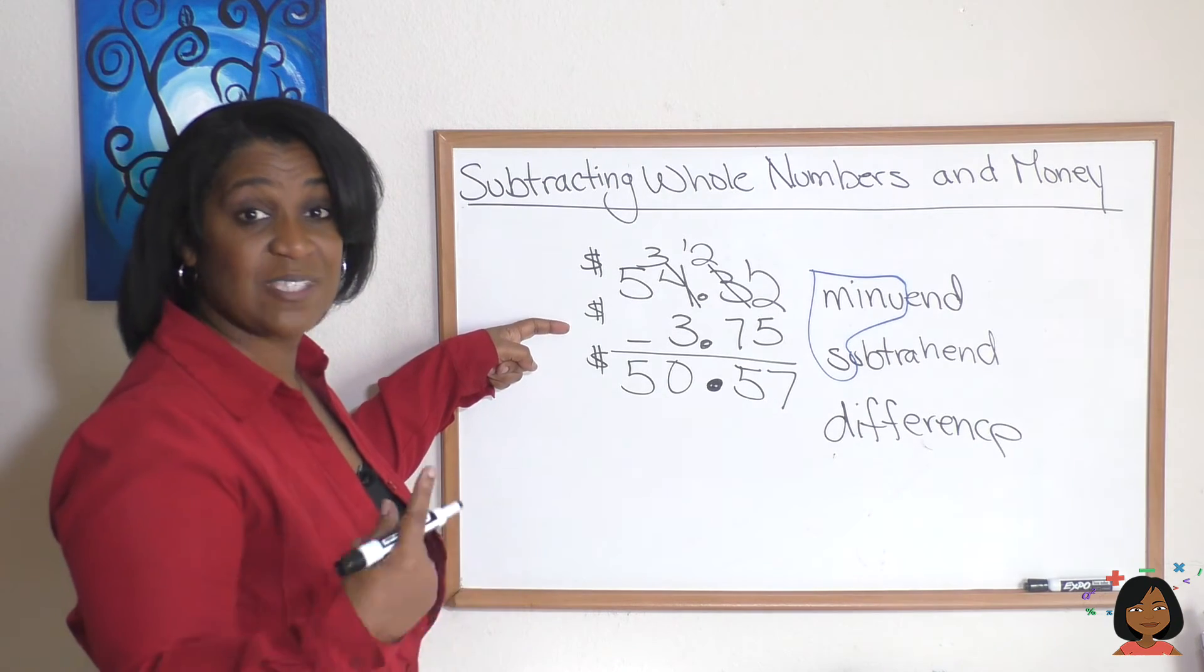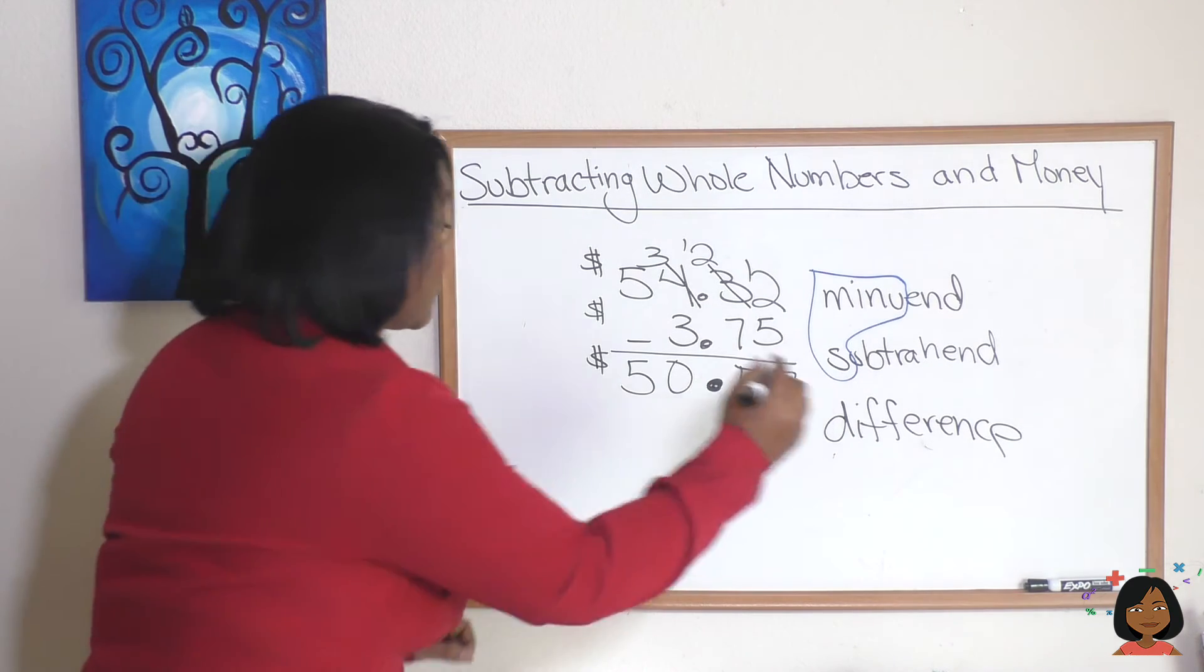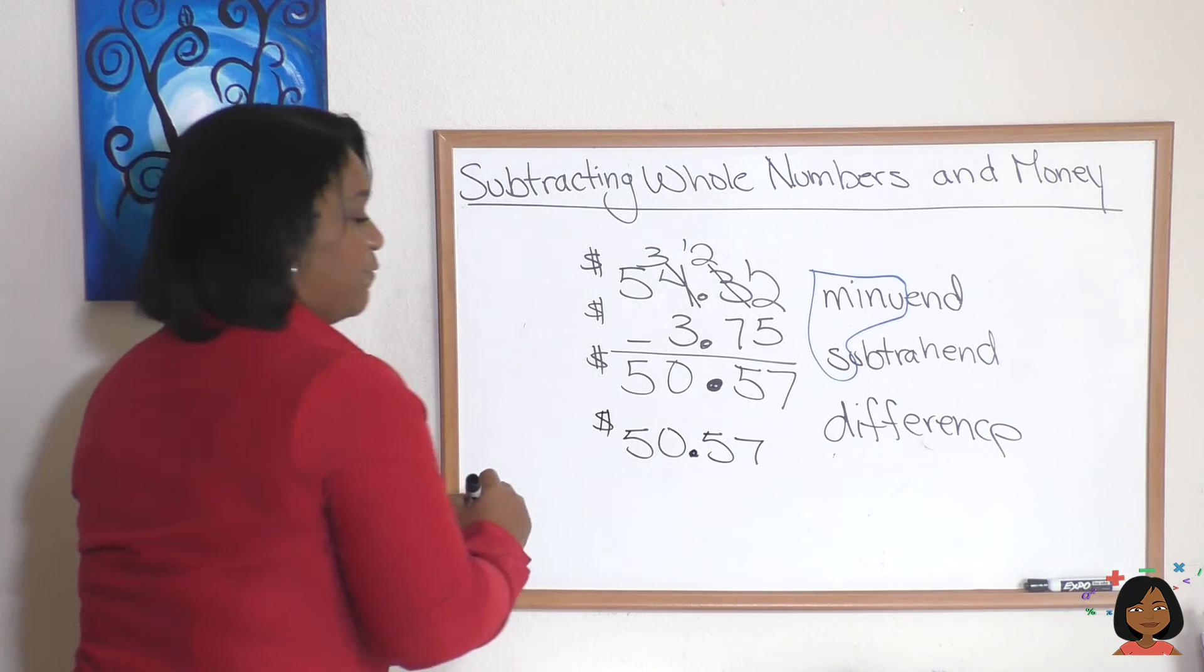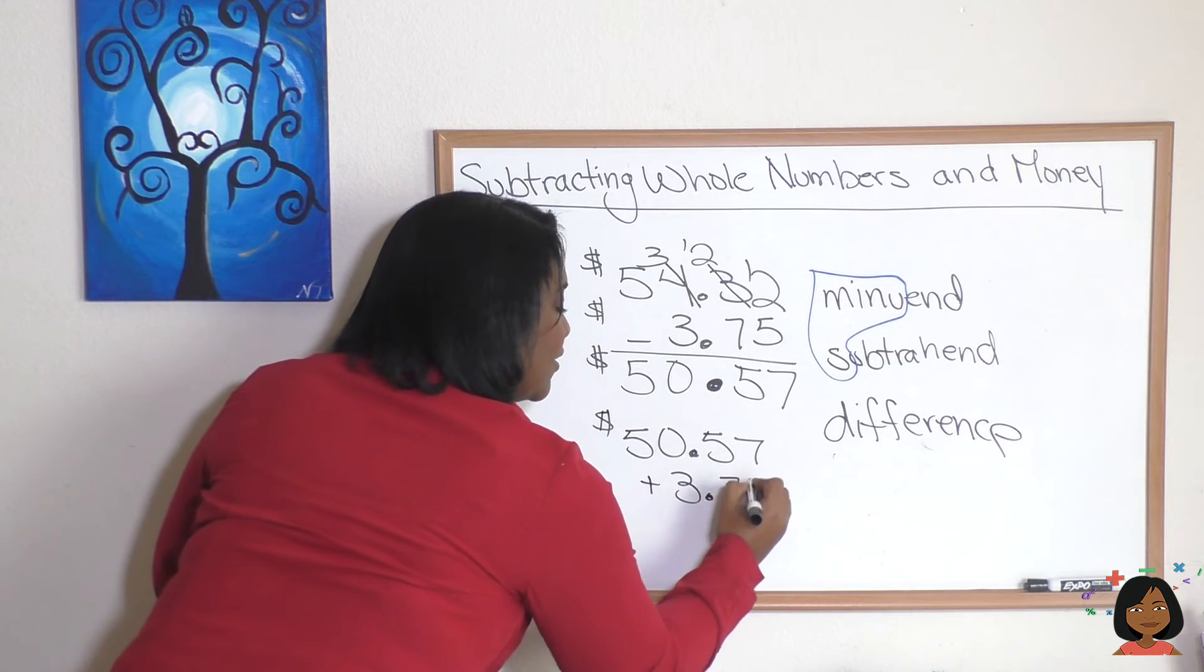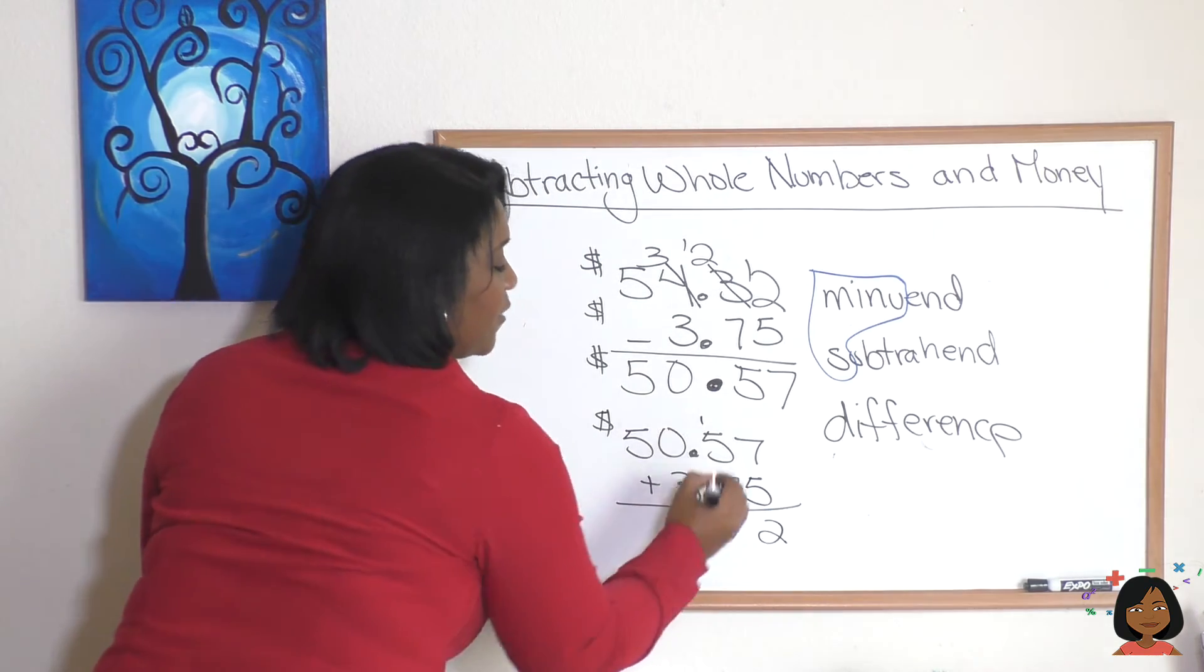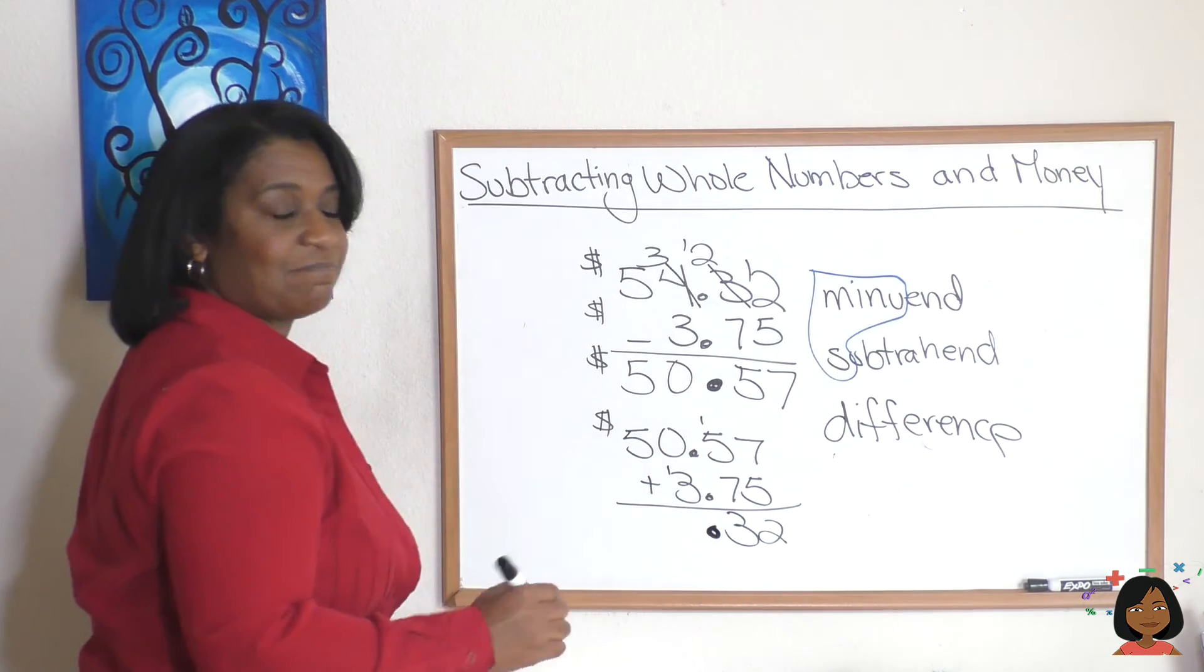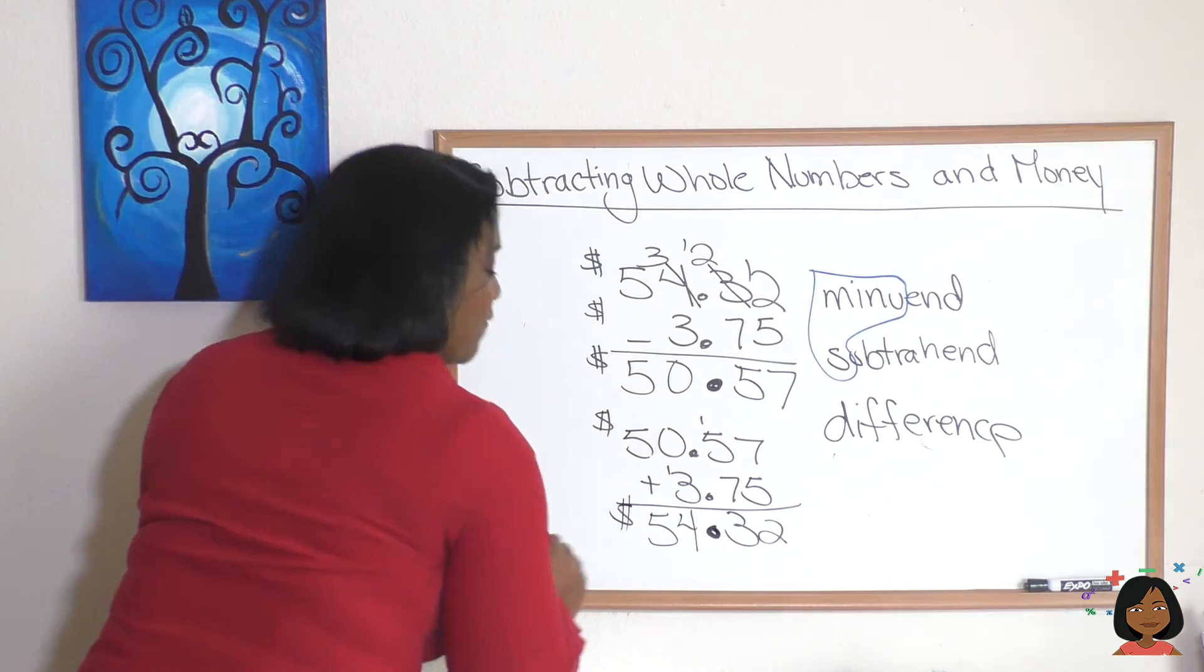Let's see if it works. I'm going to rewrite my problem down here: 50.57, I'm going to add 3.75. Here we go: 7 and 5 is 12, 7 and 5 is 12 and 1 is 13, and there is my decimal so I don't forget it. Keep it going, 3 and 1 is 4, and now we have our 5. Don't forget our dollar sign.